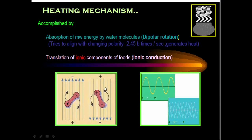Positive ions run toward the negative side and negative ions run toward the positive side. During this movement they collide with many other molecules and atoms, producing friction. Before they reach their destination, the polarity reverses. This is how ionic components of food also generate frictional heat.